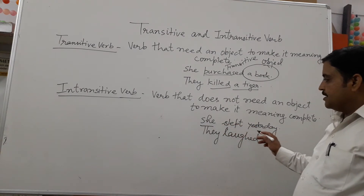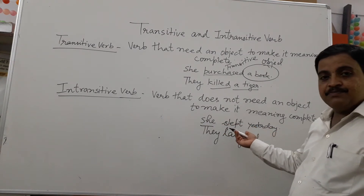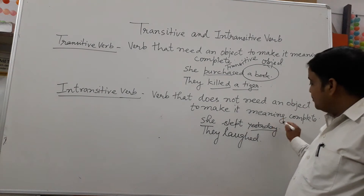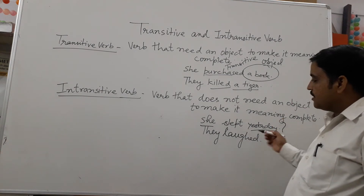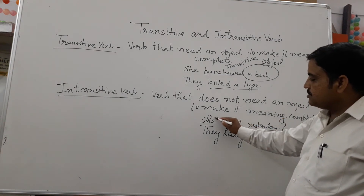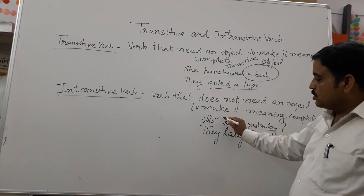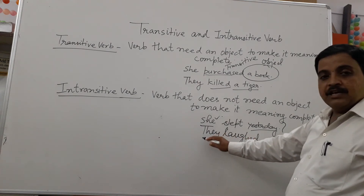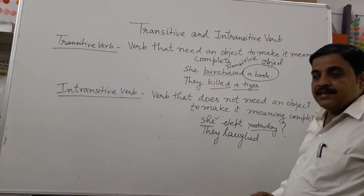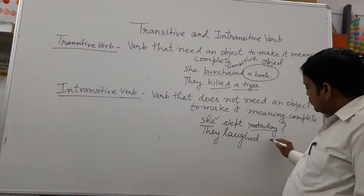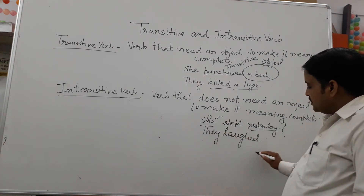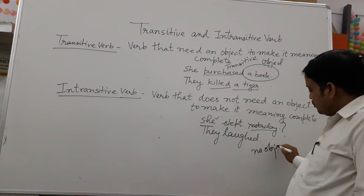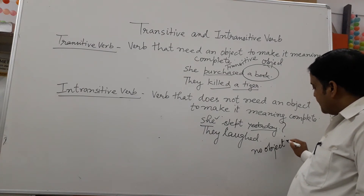For example, 'She slept yesterday.' What slept? The answer will not be an object — no object is there. 'What slept' means she. What left? The answer again will be 'they.' No object is required. Such verbs are called Intransitive Words.